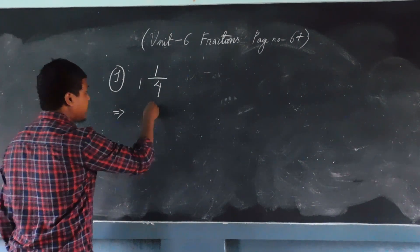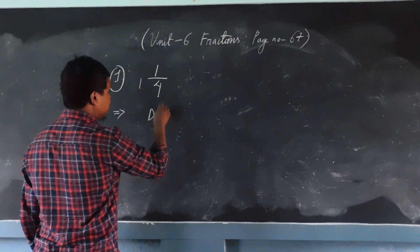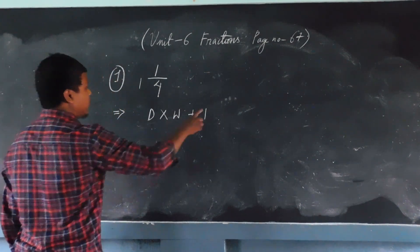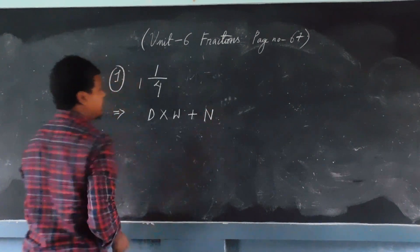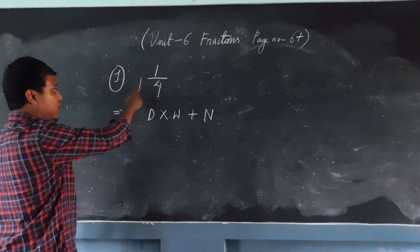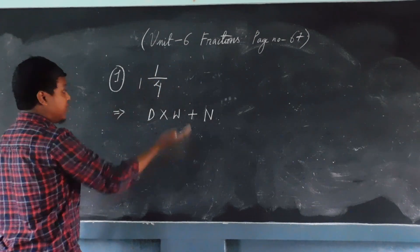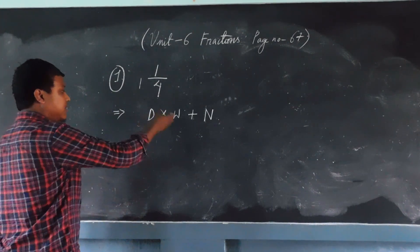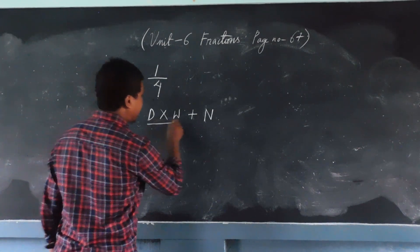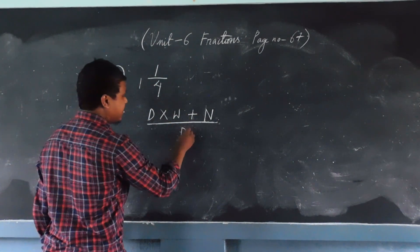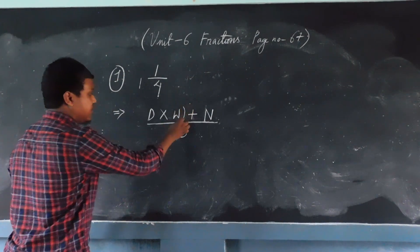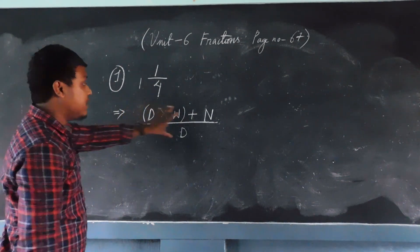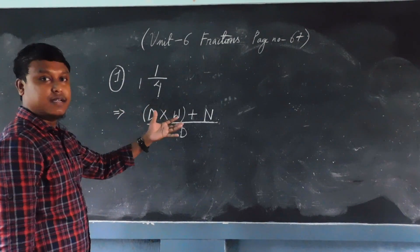The formula is: denominator into whole number plus numerator, divided by the denominator. You can write the whole number first or the denominator first — that is up to you. Then divide it by the denominator again. There is no complication here — you just have to frame it this way so that it will be easy for you to convert.